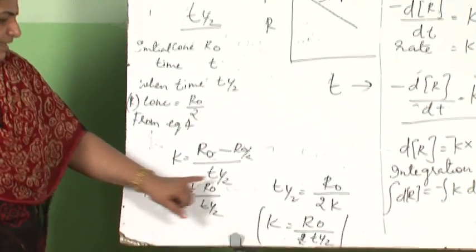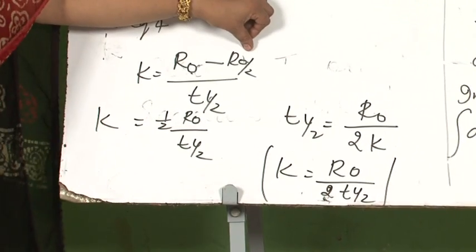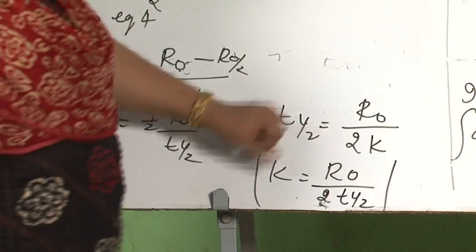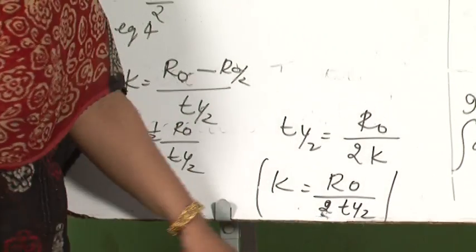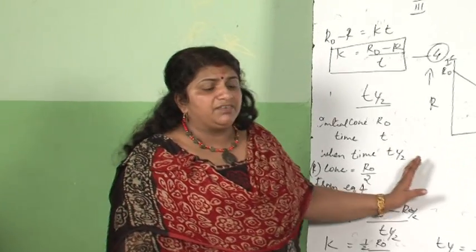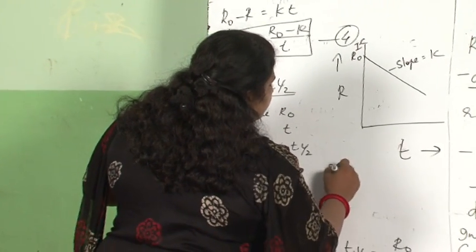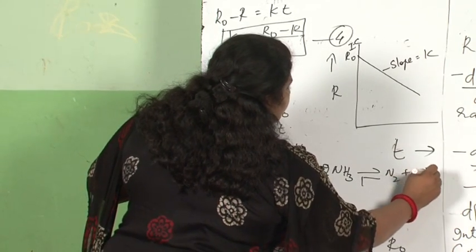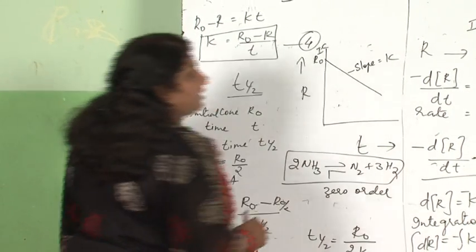R₀ by 2 divided by T½ is equal to K, which gives T½ = R₀ upon 2K, or K = R₀ divided by 2T½. This is a very interesting derivation. An example of a zero-order reaction given in the textbook is the decomposition of ammonia: 2NH₃ → N₂ + 3H₂. This is a well-known example of a zero-order reaction which follows zero-order kinetics.